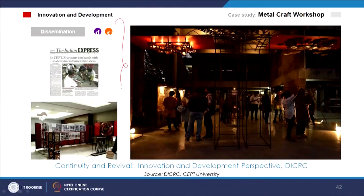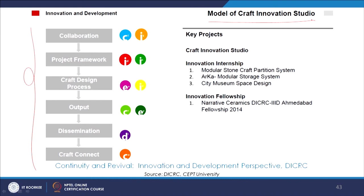Of course, the dissemination part — exhibition, publication, and media. For innovation and development, they also have a craft innovation studio and follow a certain step-by-step process and system: collaboration, project framework, craft design process, output, dissemination, and eventually craft connect — connecting different craft persons and different stakeholders.